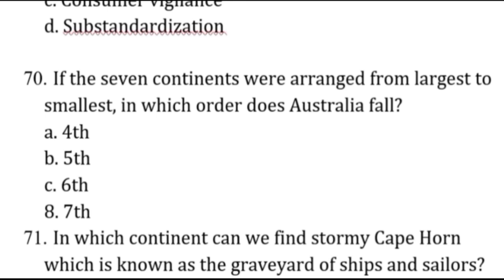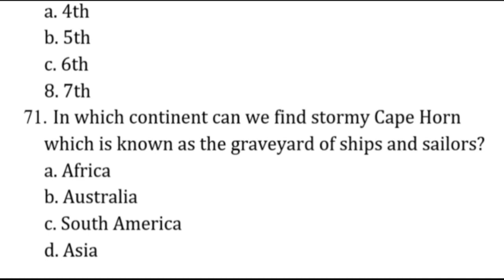If the seven continents are arranged from largest to smallest, in which order does Australia fall? The order is: Asia, Africa, North America, South America, Antarctica, Europe, and Australia is seventh — the last. That's letter D.